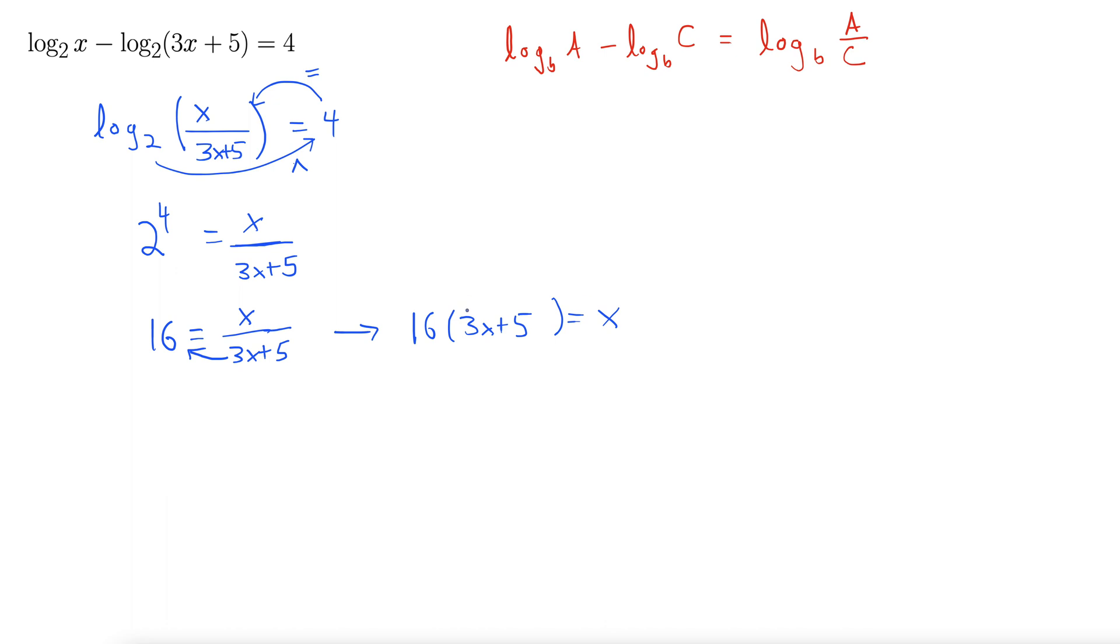It's a little challenging to get these x's isolated from here. The next thing you do is distribute the 16 through. A lot of people miss that step. So let's go ahead and distribute it. So we have 48x plus 80 equals x.